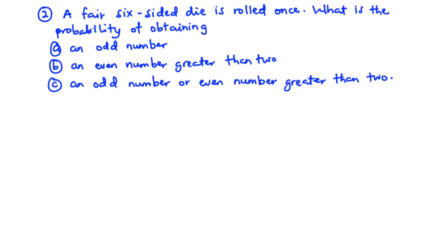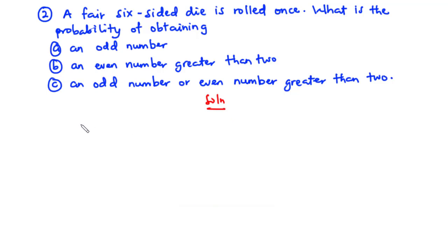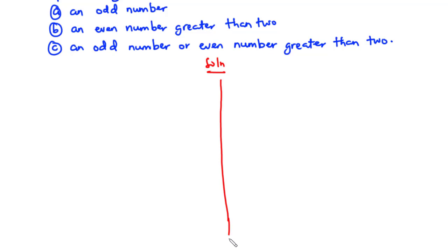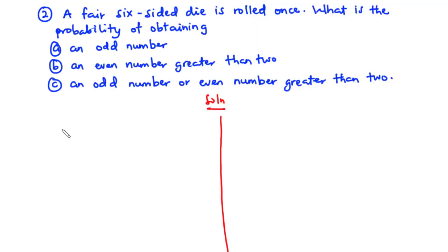For example two: a fair six-sided die is rolled once. Find the probability of obtaining (a) an odd number, (b) an even number greater than 2, and (c) an odd number or an even number greater than 2. The sample space is S = {1, 2, 3, 4, 5, 6}.